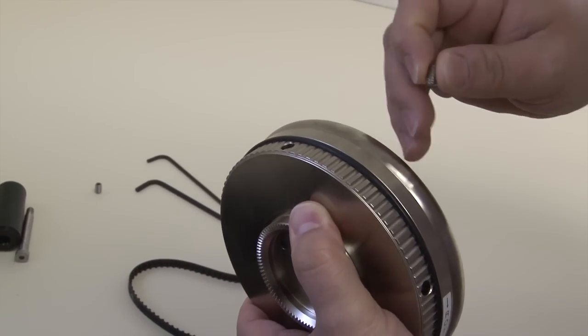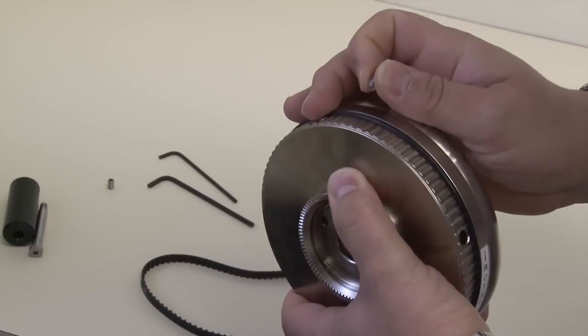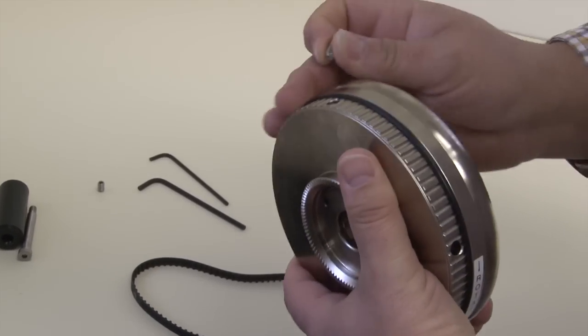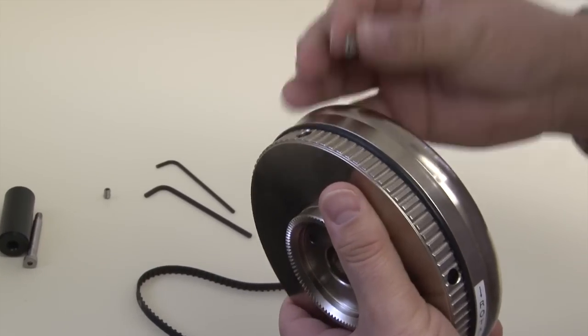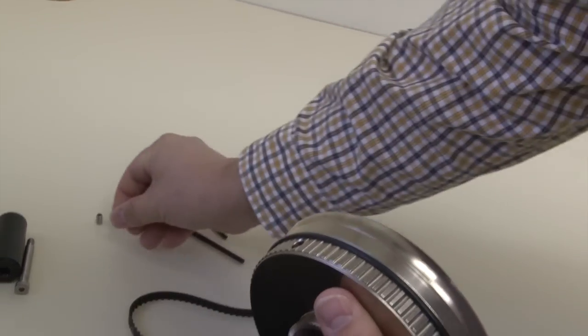We do have a separate video here at Sailrite showing you how to mount this wheel if you have the old style friction clutch. But this particular video, we're talking about the posi pin, so ignore the two set screws. You don't use them.